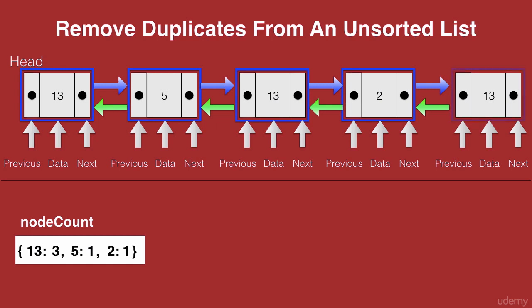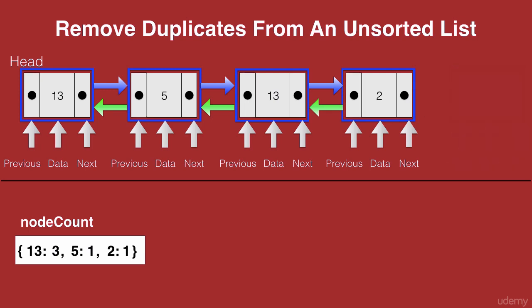We see that this node has the data 13. So we check how many times 13 has been repeated through the dictionary and we see that 13 is repeated thrice. So we remove this entry and then we decrement the count to 2.